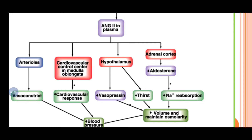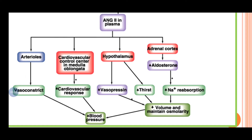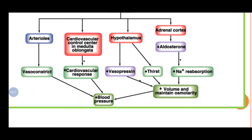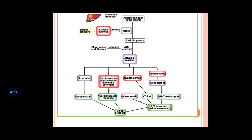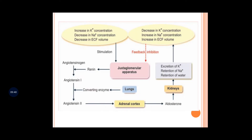Vasopressin helps maintain the volume and osmolarity of the blood. Thirst is also induced, so the person has increased water intake and volume is maintained. Most importantly, angiotensin 2 stimulates the adrenal cortex to release aldosterone, which causes increased sodium reabsorption. All these features help maintain blood pressure.